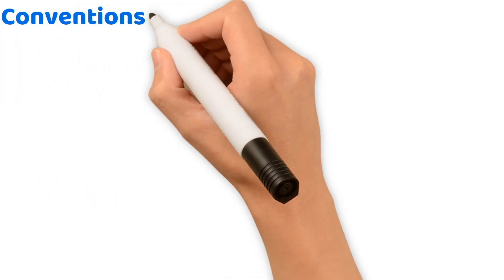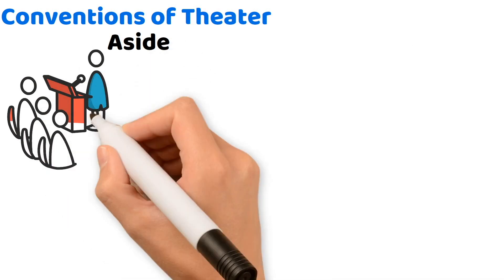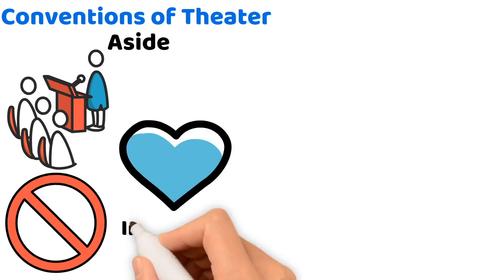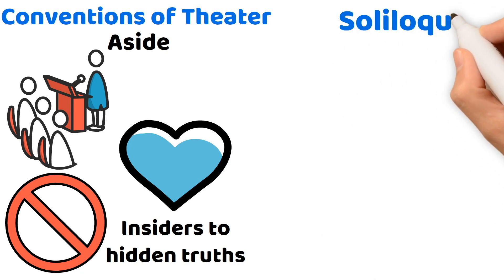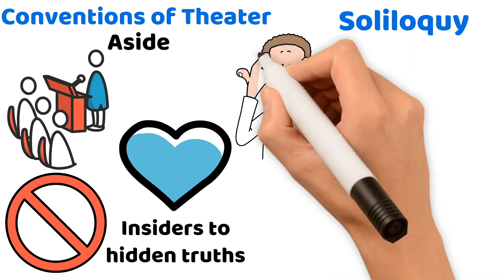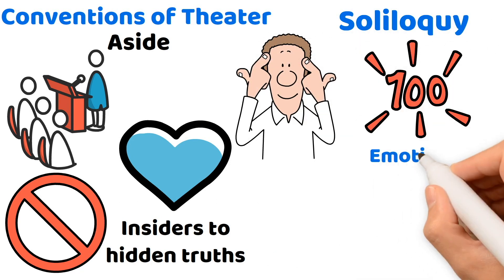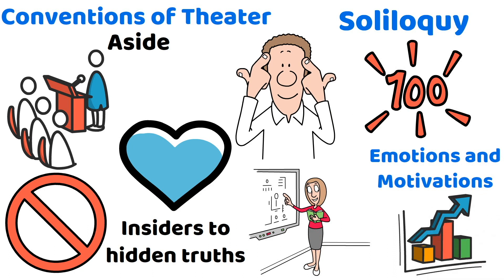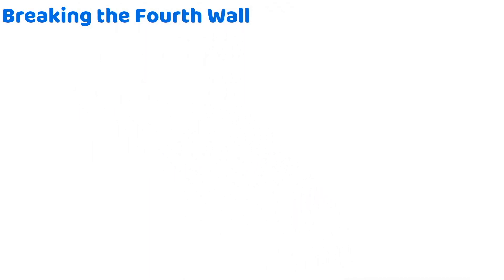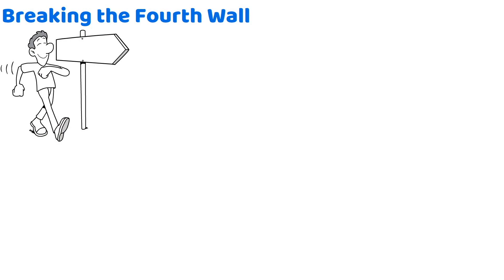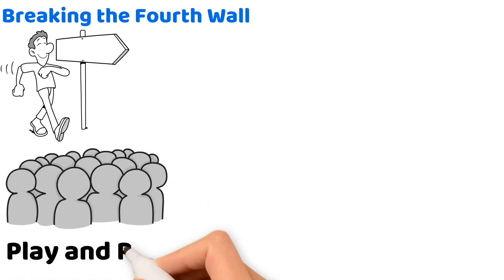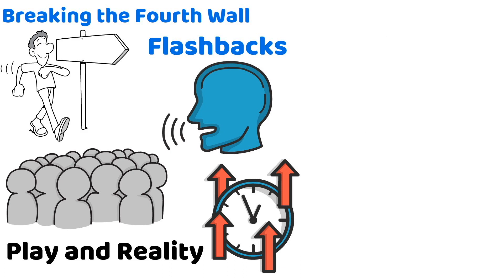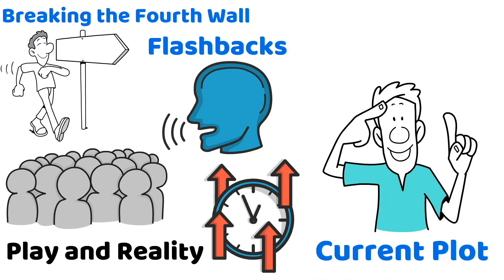Moving to conventions of theater: the aside is when a character covertly shares secrets directly with the audience, not meant for the ears of others on stage, creating an intimate bond that makes the audience feel like insiders. The soliloquy is where a character reveals their innermost thoughts aloud — raw moments offering profound insight into the character's emotions and motivations. As a teacher, guiding students to understand and perform soliloquies can significantly enhance their empathetic skills. Breaking the fourth wall has characters step out of their narrative world and speak directly to the audience. Flashbacks transport the audience back in time to uncover critical backstory, enriching the current plot and deepening understanding of character motivations.